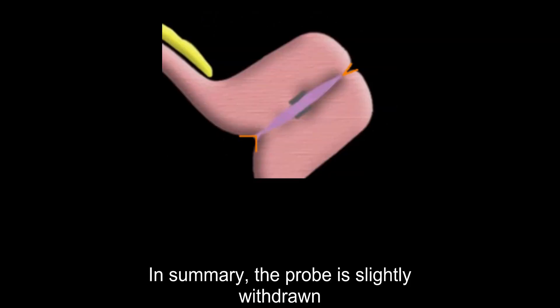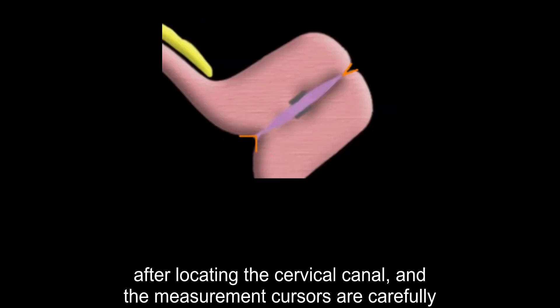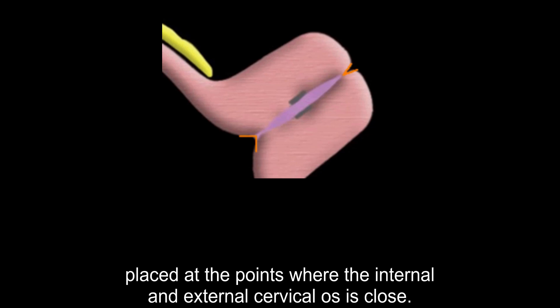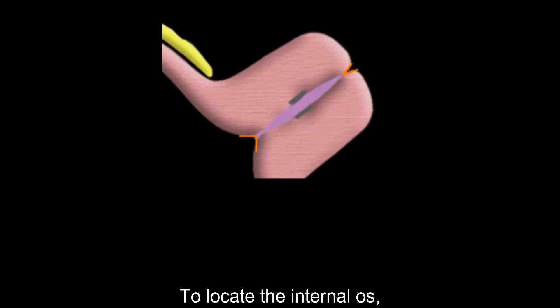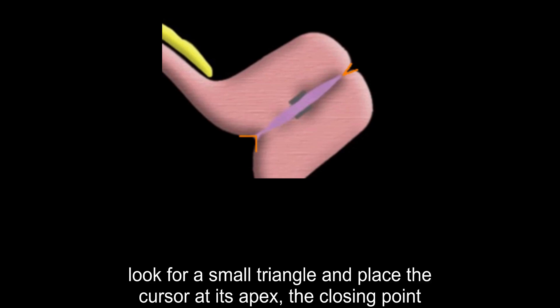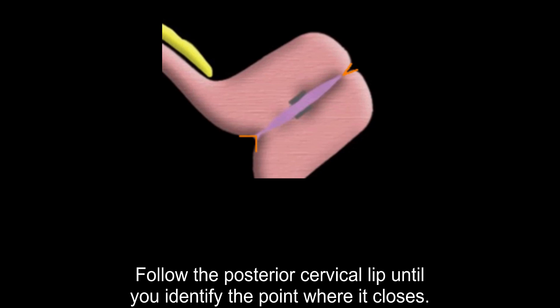In summary, the probe is slightly withdrawn after locating the cervical canal, and the measurement cursors are carefully placed at the points where the internal and external cervical os are close. Measure the distance between these points accurately. To locate the internal os, look for a small triangle and place the cursor at its apex — the closing point. For the external os, follow the posterior cervical lip until you identify the point where it closes.